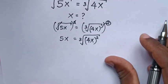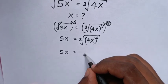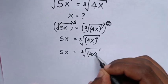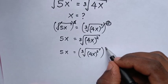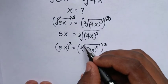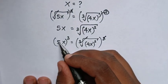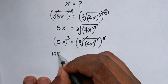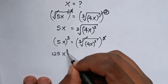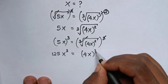Then we are going to multiply by cube in both sides. So it will be 5x is equals to cube root of 4x bracket square. Then we multiply by cube in both sides. This cube will cancel with this cube root. Here 5 power of 3 is 125 and here is x power of 3, so it will be equal to 4x bracket square.